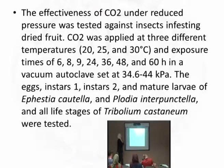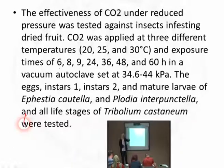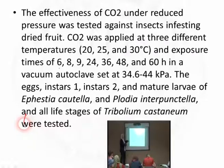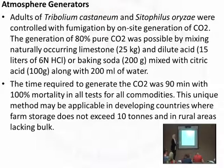The study tested combinations of more than one temperature and more than one exposure time — from 6 to 60 hours — under low pressure at temperatures of 20°C, 25°C, and 30°C. All life stages of Ephestia, Plodia, and Tribolium were studied. Results showed that the combination of temperature and atmospheric pressure significantly affects mortality, helping determine the optimal temperature, exposure time, and atmospheric pressure to achieve 99% mortality.